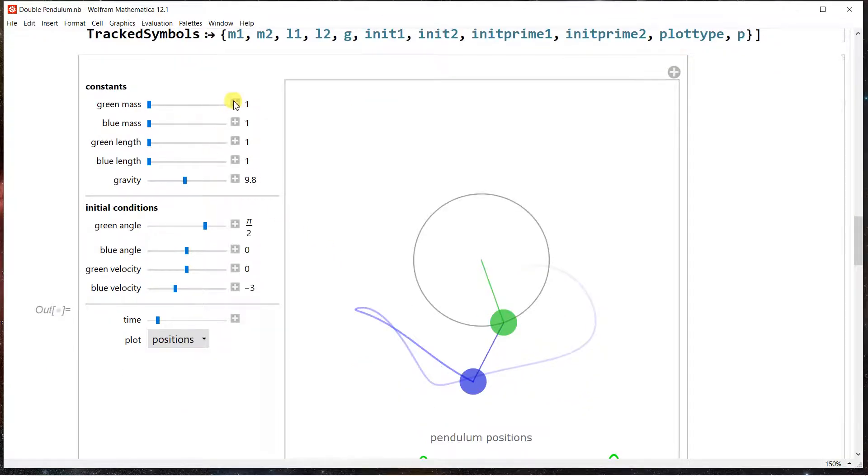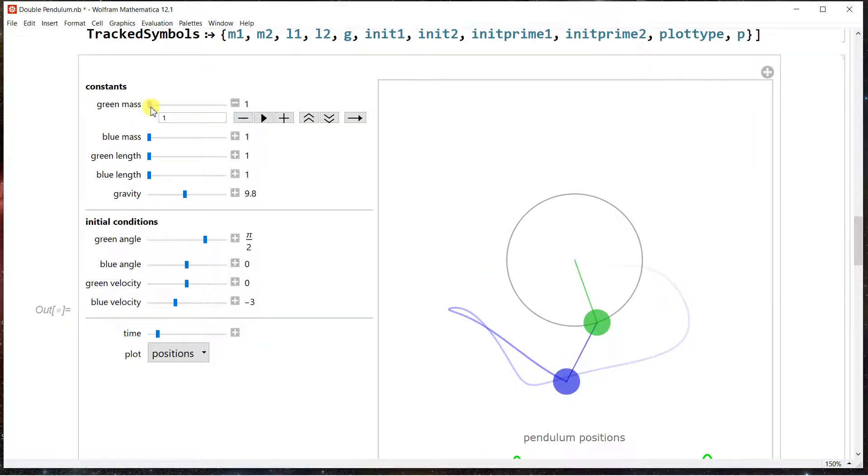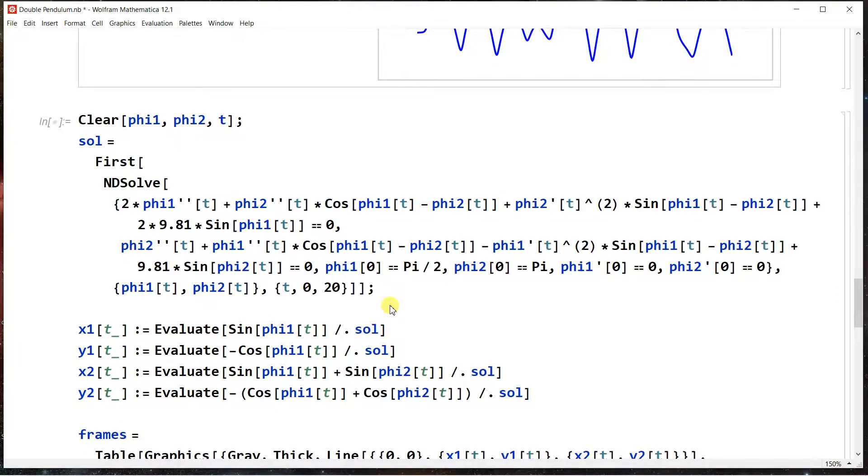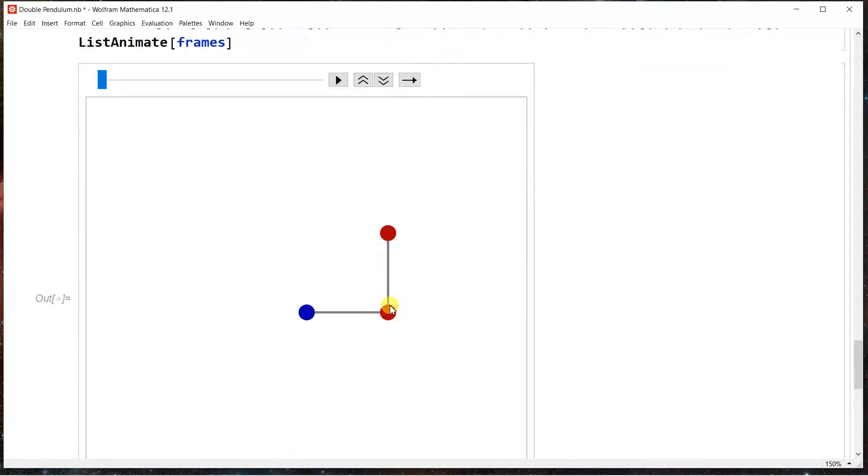There are slider bars over here you can make, like, the green mass more massive than the second mass and so forth. You could change the gravitational constant of acceleration. You could change the initial conditions and all of this stuff. There's another thing I've prepared for you, which is this GIF.